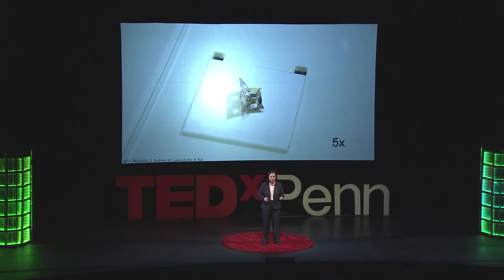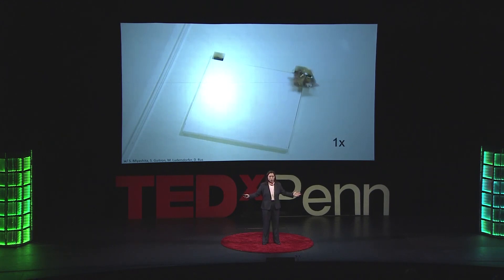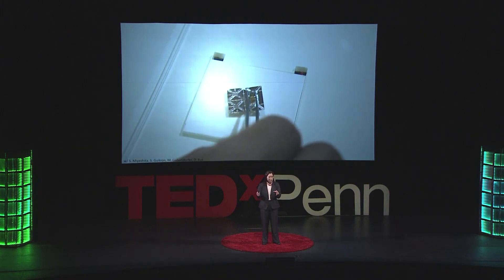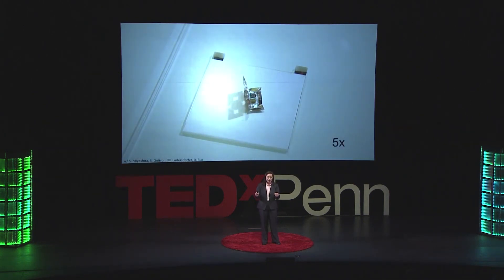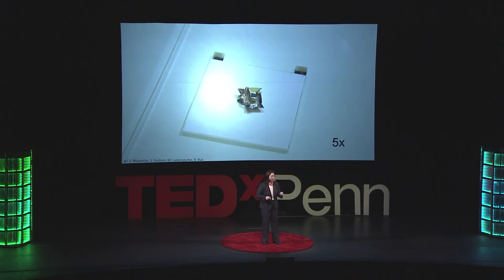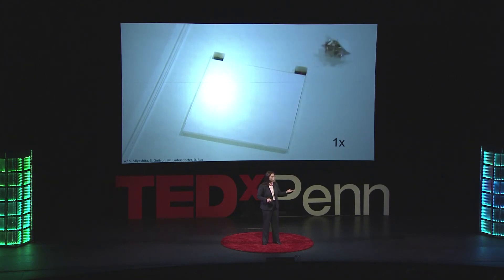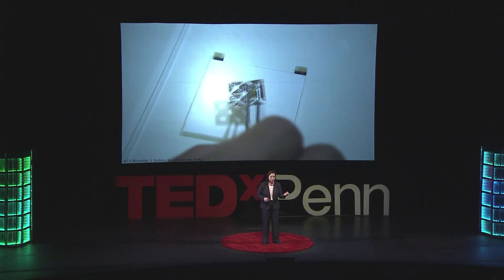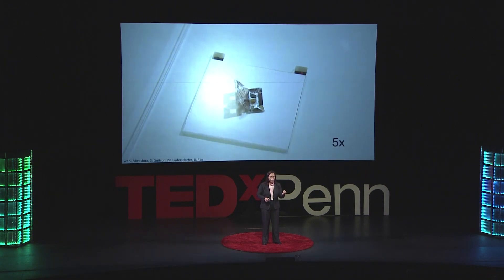This robot can fold itself up on a hot plate and then move under the influence of an external magnetic field. It's made with a vinyl cutter, thin sheets of plastic, and shrinky-dink — all materials available to everyone. The design was created by converting a fold pattern using computational tools into a sequence of cuts and laminations. The sheet can be fabricated in about an hour, and assembly takes a couple of minutes, so very quickly you can get this custom robot to crawl away.